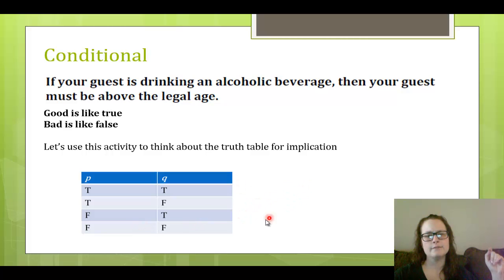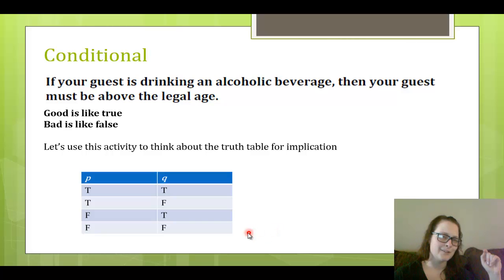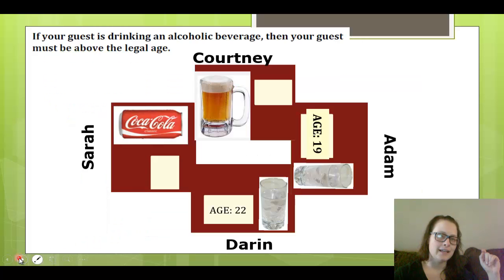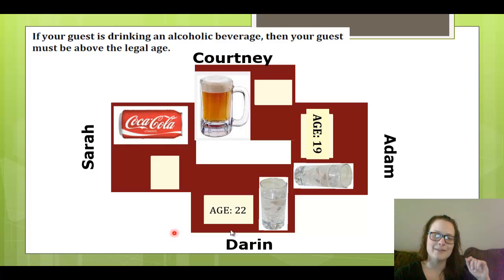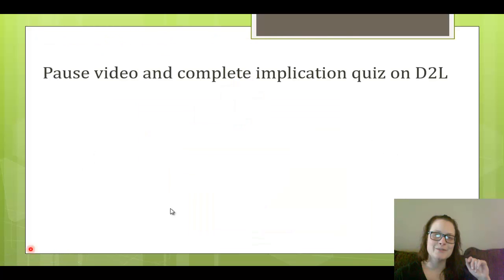Hopefully you can fill in those four truth values for P implies Q. There's a quiz on D2L to complete this truth table for the implication — you get two attempts. On your first attempt, just give it a go based on this situation without doing extra research. In the next video we're going to talk about the biconditional and more about implication — different ways of reading it and interesting tidbits. See you soon!